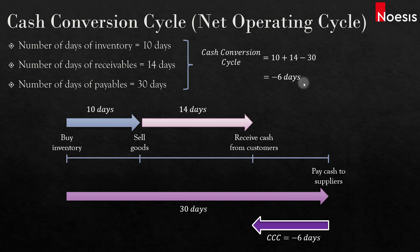For businesses, they would prefer the cash conversion cycle to be as short as possible. The shorter the cycle, the greater the company's cash-generating ability, and the less need there is for liquid assets or outside financing. For many companies, the cash conversion cycle represents a period of time that requires financing.